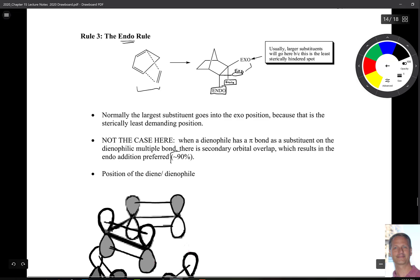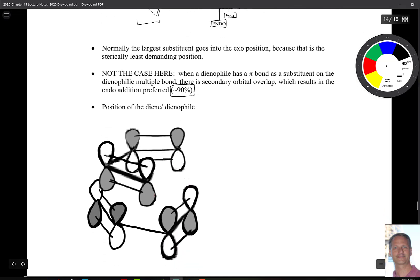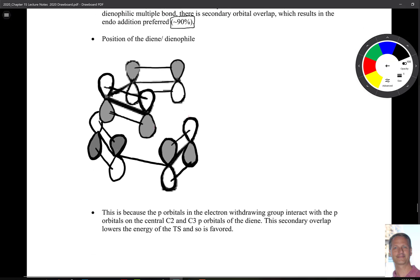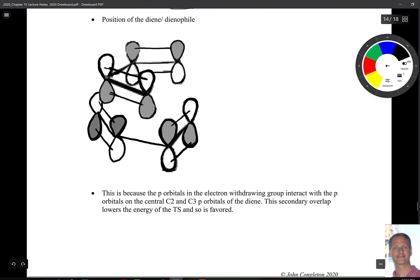What happens is predominantly we end up seeing the endo product being formed. Part of that has to do with secondary pi orbital overlap. Often on the diene we have electron donating groups, and often on the dienophile we have electron withdrawing groups like a carbonyl. If we look at the structure, here on this top you have your HOMO, highest occupied molecular orbital of the diene, and your LUMO down below.